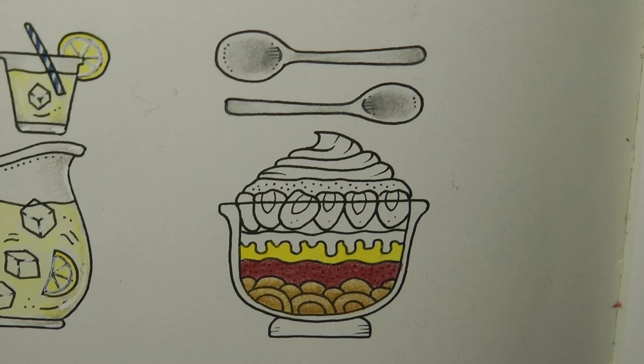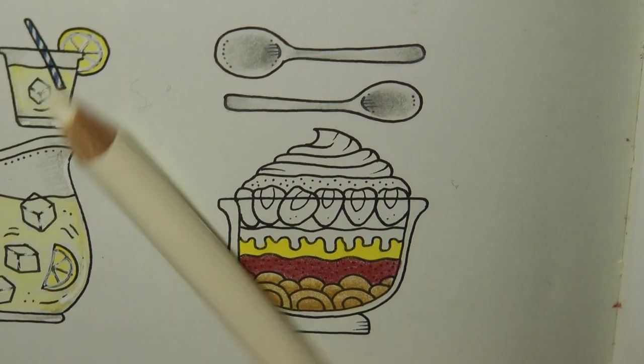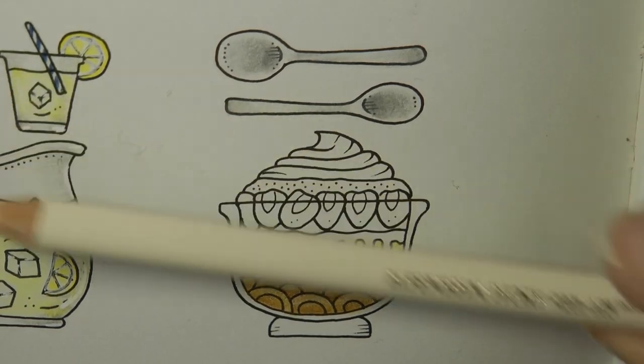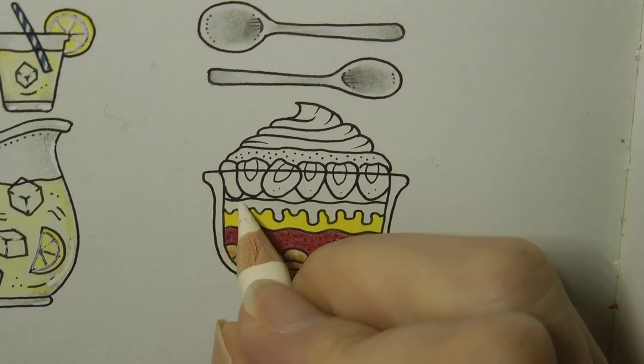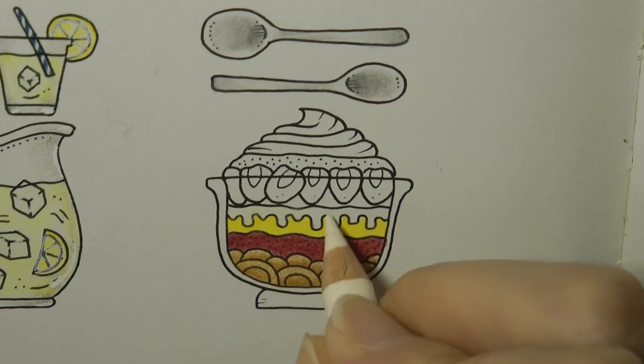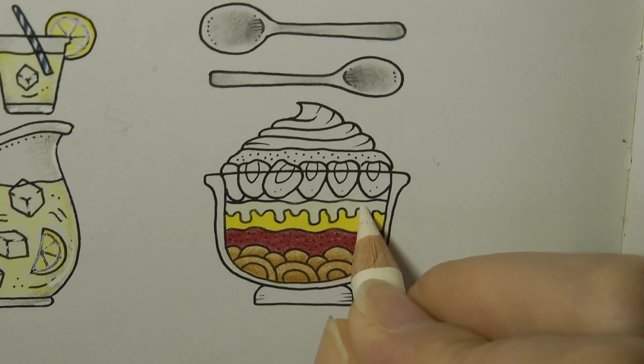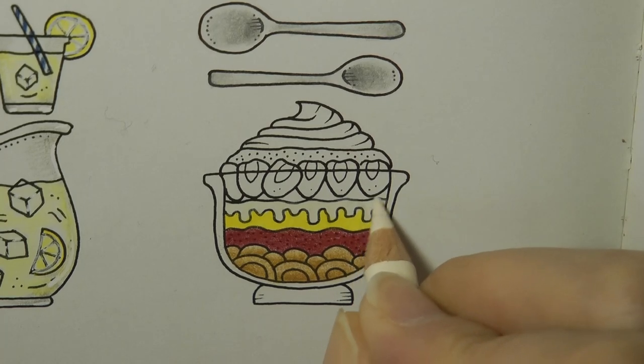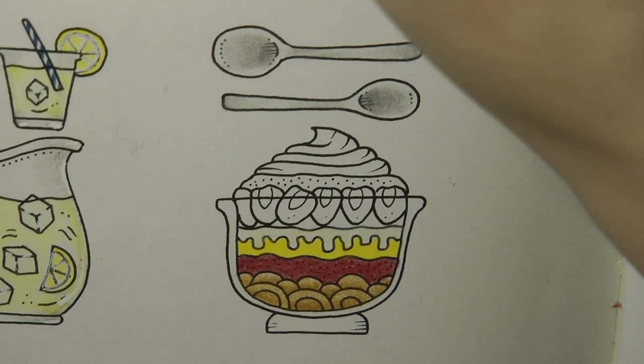Now the next layer I think is cream. I'm not going to do it white because cream isn't completely white. I'm going to use the ivory. Hopefully you'll be able to see. It's not very bright but the paper's quite ivory anyway so it hasn't really done a lot.